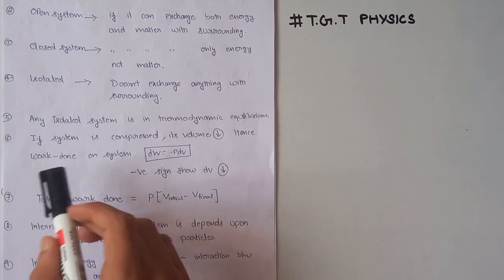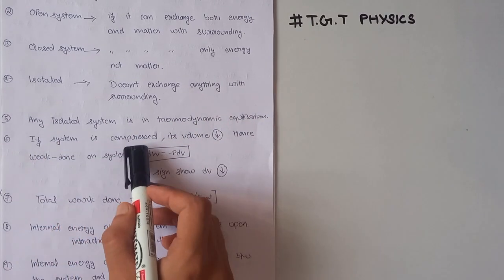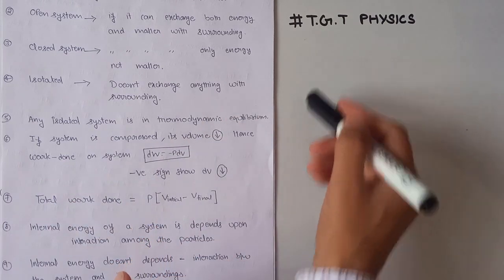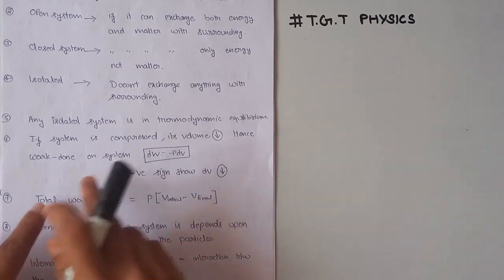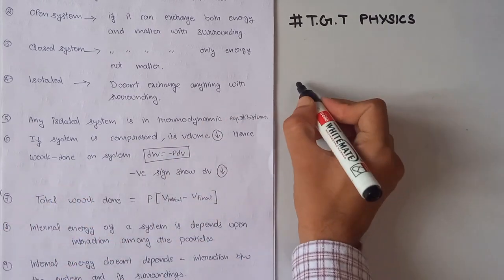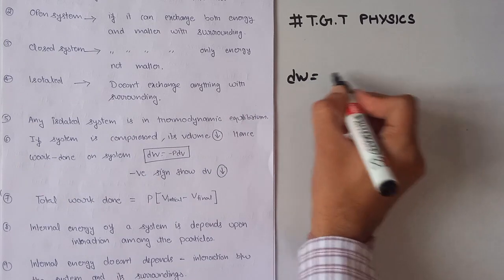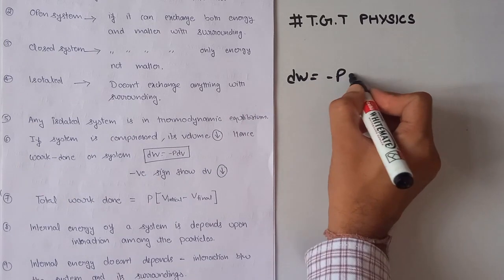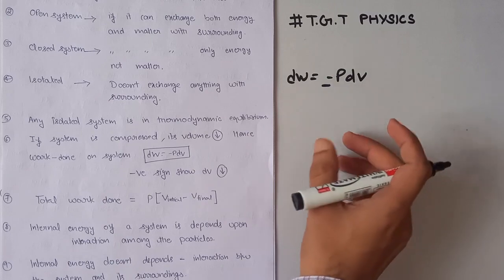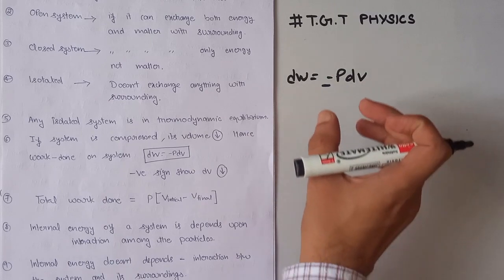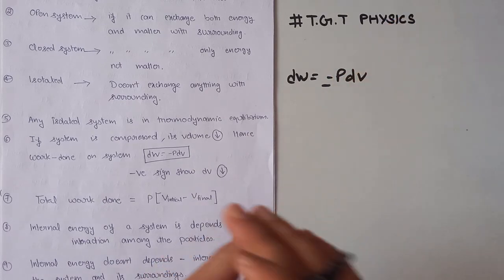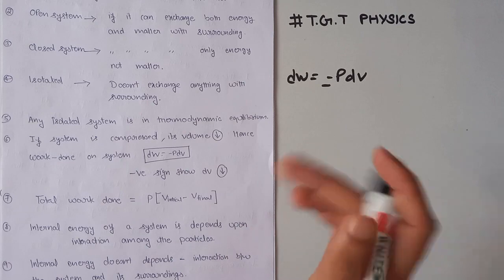Key point number six: if a system is compressed, then its volume decreases, and hence work is done on the system. The work done is given by dW = −PdV. The negative sign indicates that the volume of the system decreases when we compress the system.